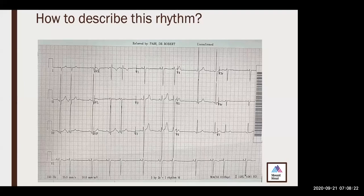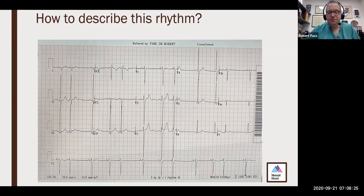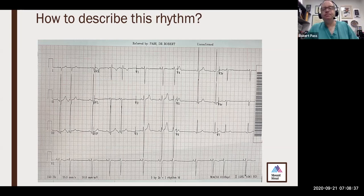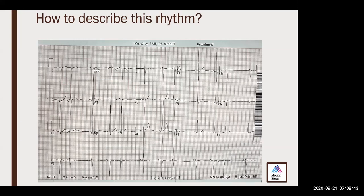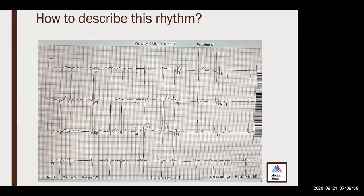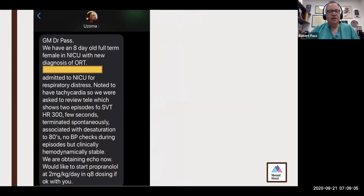How old is this patient? I don't recall — I believe it's a baby, less than a year of age. The QRS is narrow. The QT interval — the QTc — is normal, roughly less than half of R-R. You can measure it too.